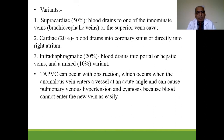There are three types: supracardiac, occurring in 50% of cases, where blood drains to one of the innominate or brachiocephalic veins or to the superior vena cava. In the cardiac type (20%), blood drains into the coronary sinus or directly into the right atrium. In the infra-diaphragmatic type (20%), blood drains into portal or hepatic veins; in 10% it may be mixed.